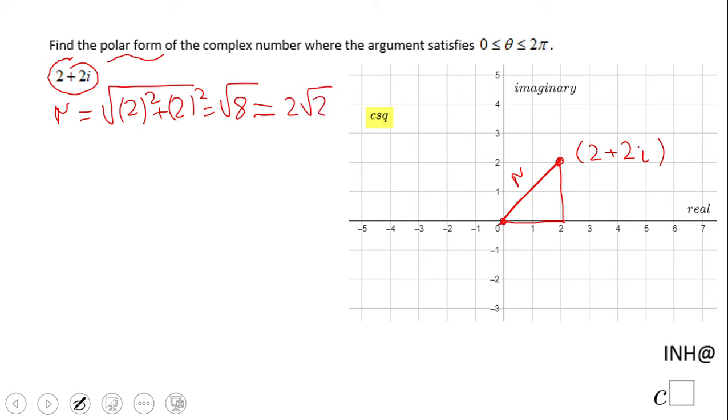Then we need to find this angle, the angle between r and the real axis. For that reason I'm gonna use tangent, but you can use any other function. Tangent of theta equals 2 over 2, where the y coordinate is 2 and the x coordinate is 2, so we end up with 1.